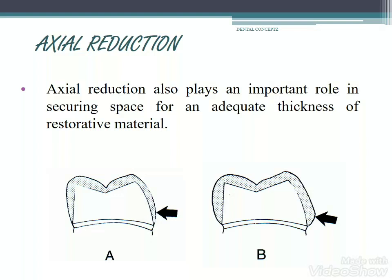Axial reduction also plays an important role in securing space for adequate thickness of restorative material. If the reduction is not adequate, this results in over-contoured restorations, which is not good for oral health.